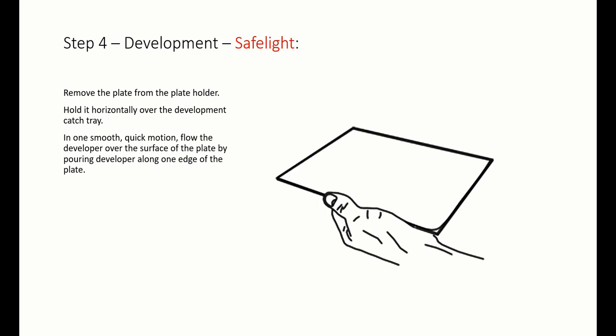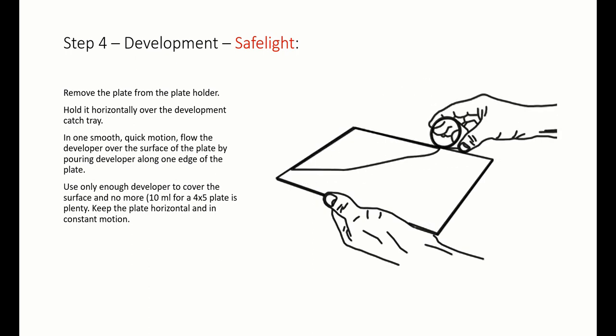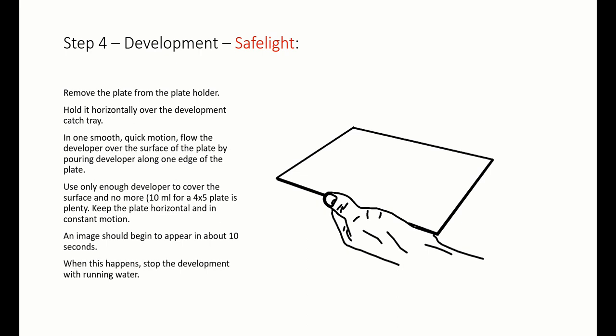Use only enough developer to cover the surface and no more. 10 milliliters for a 4x5 plate is plenty. Keep the plate horizontal and in constant motion. An image should begin to appear in about 10 seconds. When this happens, stop the development with running water.